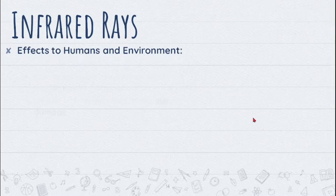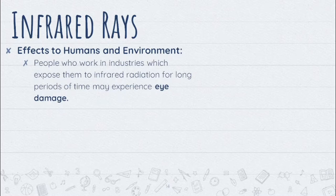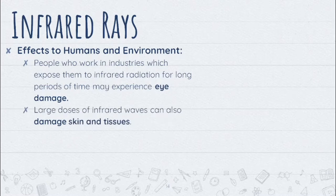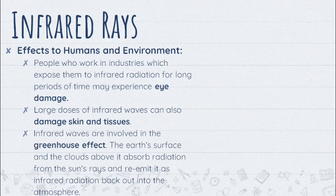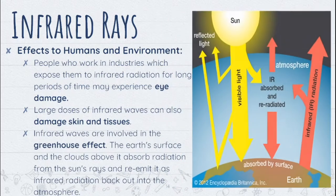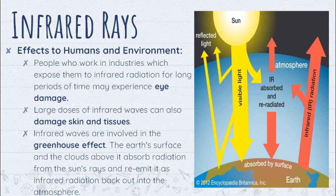Some effects of infrared to humans and environment: people who work in industries exposing them to infrared radiation for long periods may experience eye damage. Large doses of infrared waves can also damage skin and tissues because it is in the form of heat, so overexposure is harmful. Infrared waves are also involved in the greenhouse effect — the Earth's surface and clouds absorb radiation from the sun's rays and re-emit it as infrared radiation back into the atmosphere, trapping some heat.